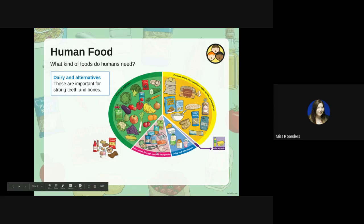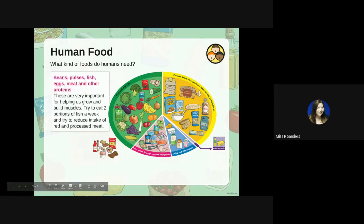Our next category is beans, pulses, fish, eggs, meat, and other proteins. These are very important for helping us grow and build muscle. We try to eat two portions of fish a week and try to reduce the intake of any red or processed meat. Personally, I don't eat fish because I don't like it and I'm allergic to it, so I substitute it for different things in that category like lentils, beans, and chicken.